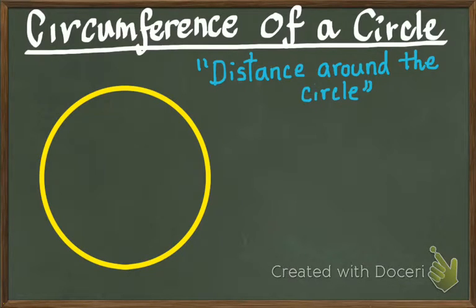Circumference is the distance around the circle. Let's say you are standing at a point on the circle and you walk around the circle back to the point where you started. The distance that you covered is the circumference of that circle. You can think of the circumference similar to the perimeter of a rectangle or a square that you have learned before.